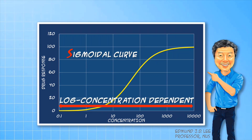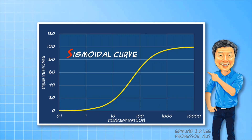Instead of a straight line, it assumes an S-shaped curve. We call this a sigmoidal curve. It is also concentration dependent, but the concentration axis is log or exponential. The shape of the curve makes the concentration dependence quite unique.